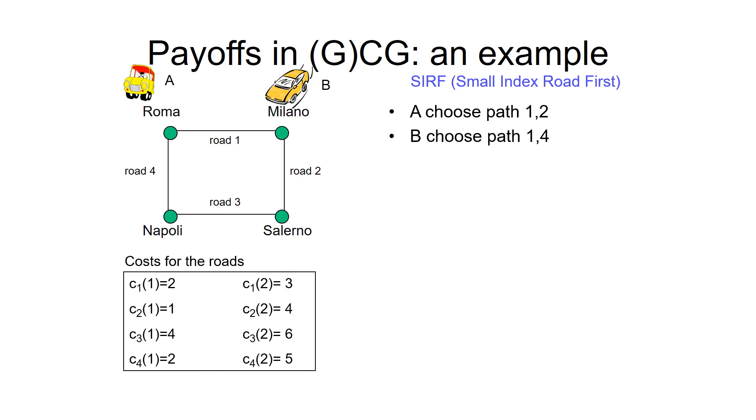Assume costs of the roads are given like this: if one player is using road 1, the cost is 2. If two people are using road 1, the cost is 3. If one person is choosing road 2, cost is 1. Two people using road 2, cost is 4. So given the cost, what is the utility?